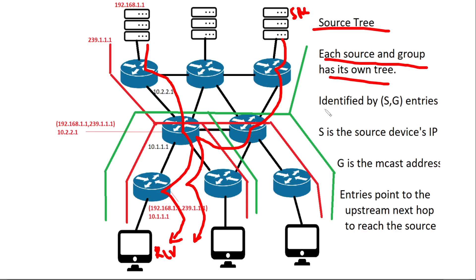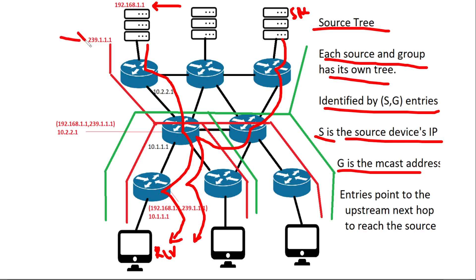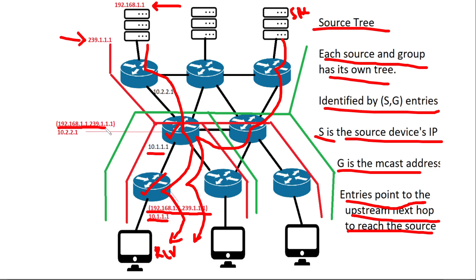These trees are identified by S,G entries, where S is the source IP address — for instance, this IP address — and G is the multicast address, for instance this one. S,G entries will point to the upstream next hop to reach the source. For instance, this router has this S,G entry and points to the next hop to reach the source, and this other router has this S,G entry that will point to the next hop to reach the source.